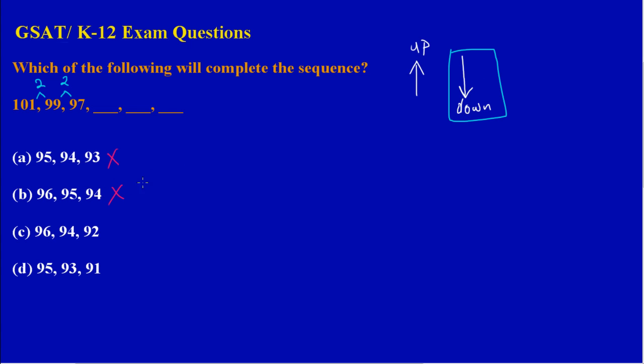In option C, I have 96, then 94, then 92. Here I am decreasing by 2. However, if you notice, this first term in the sequence is 96, and when you compare it with the last term they gave us, which is 97, the difference there would be 1. Even though this sequence is decreasing by 2, it wouldn't match because the difference between 97 and 96 is still 1. So that would be eliminated.